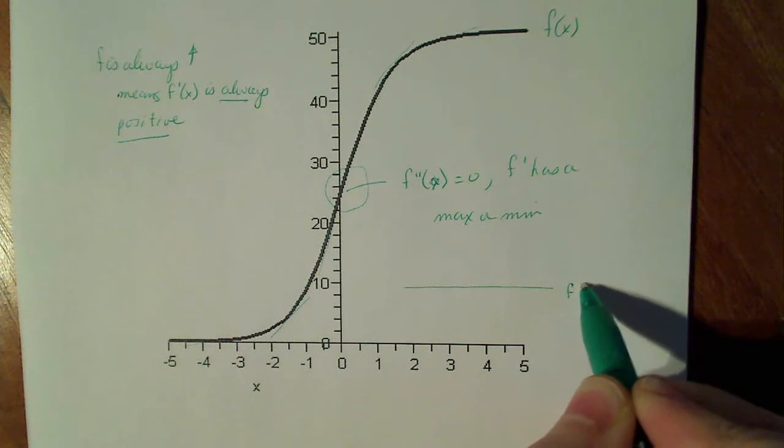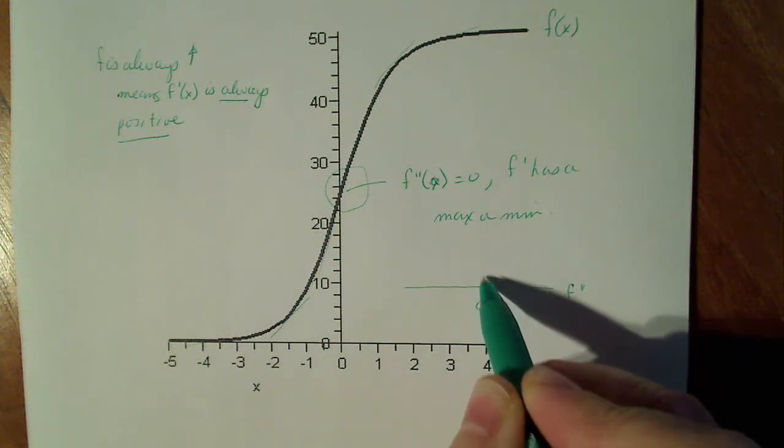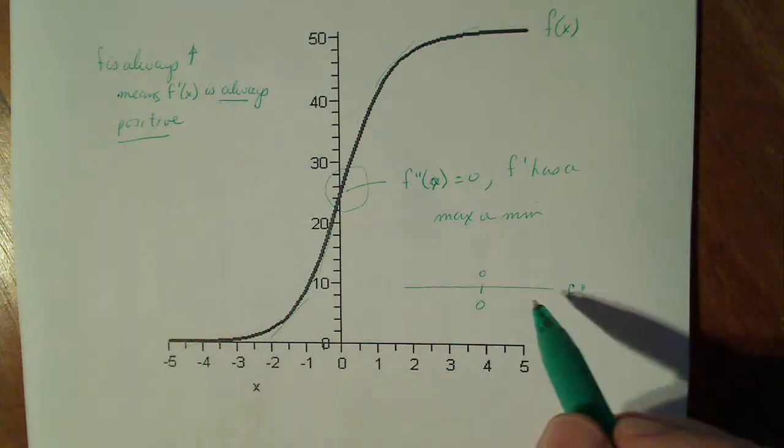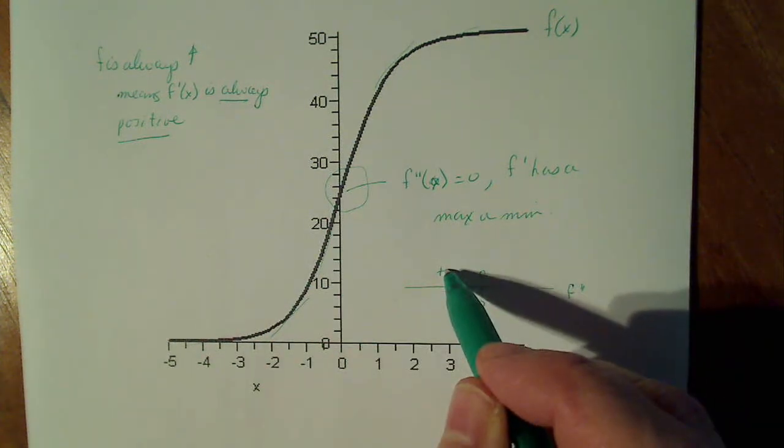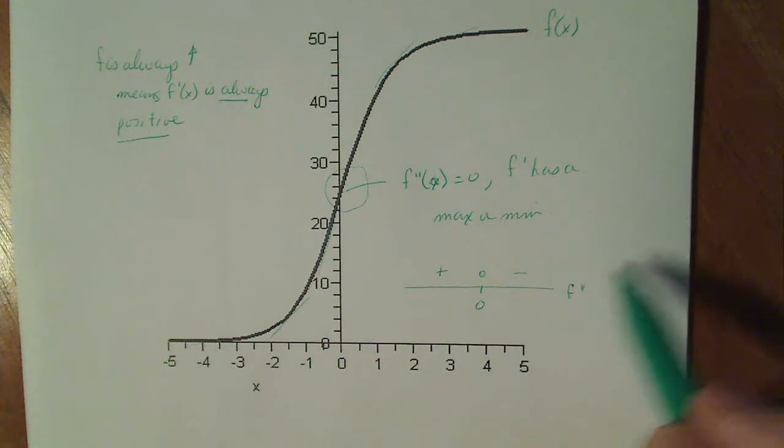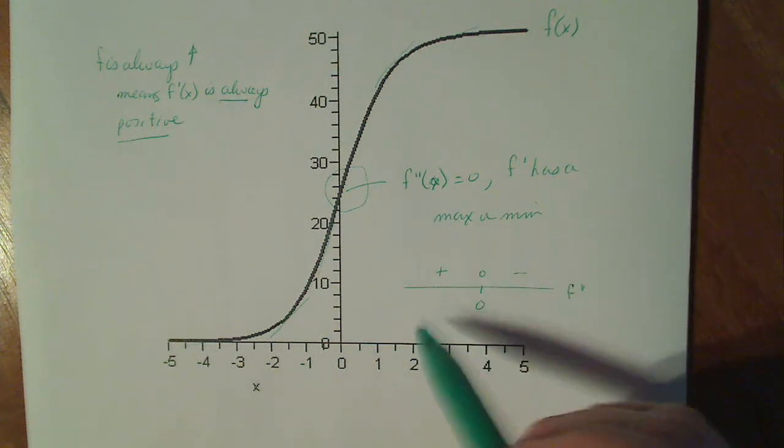If I think this is an f double prime number line and I have an inflection point at zero, I'm concave up beforehand, so f double prime is positive, concave down after, so it's negative. But this tells me how f prime behaves.